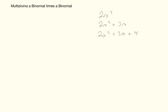Within each individual term, you might have a coefficient at the front — a number multiplied by the rest of the term — and the term probably has a variable. A term made up of just a number is called a constant. The words coefficient, variable, and constant are words I would expect you to know.